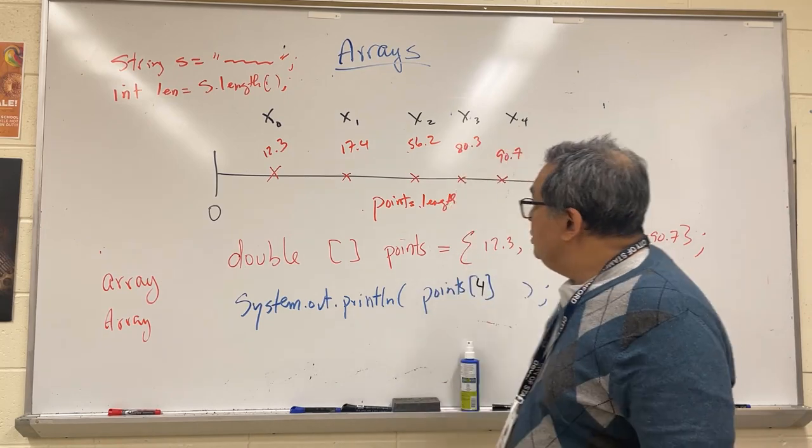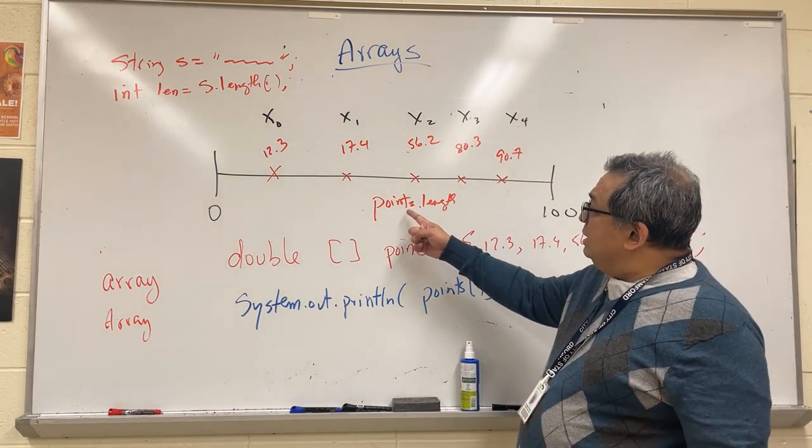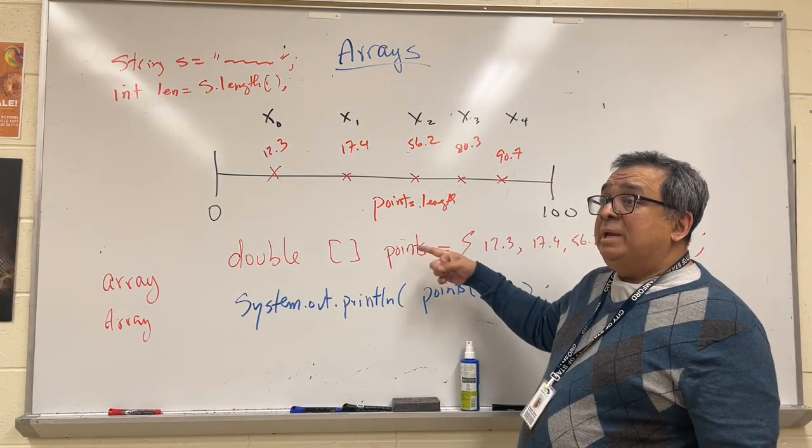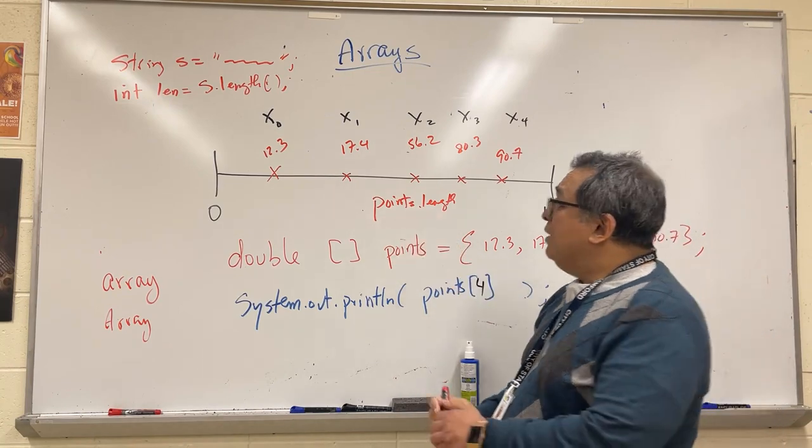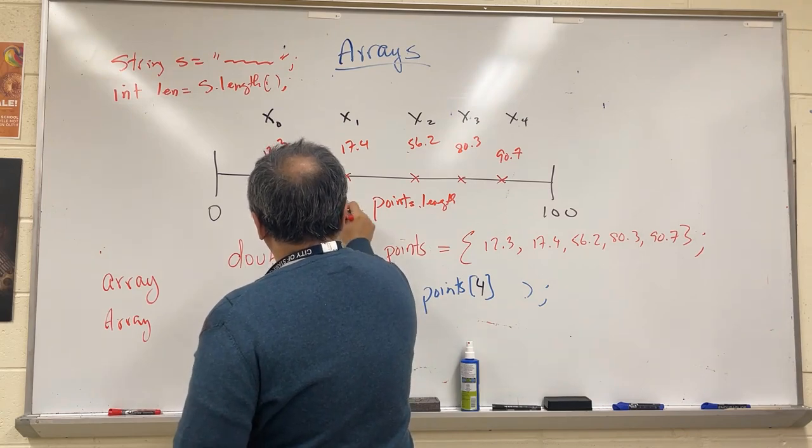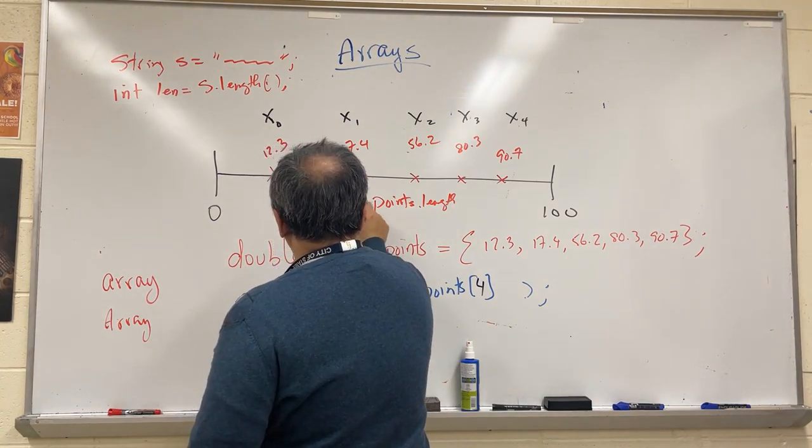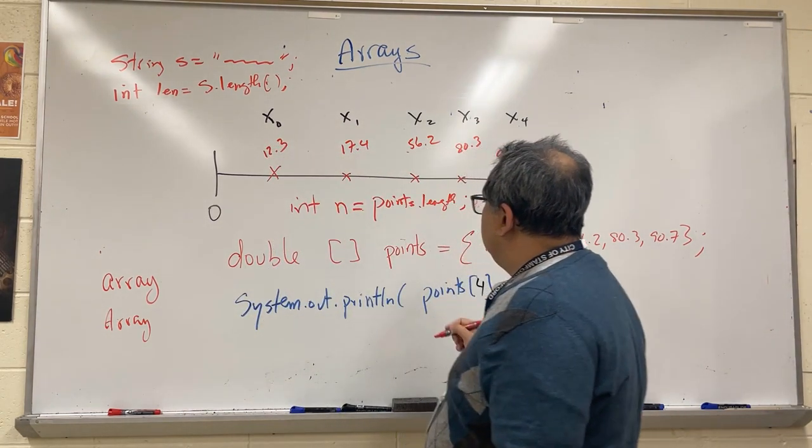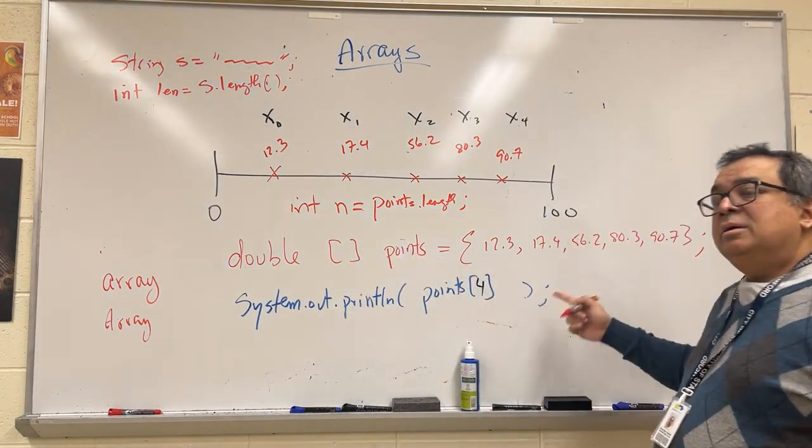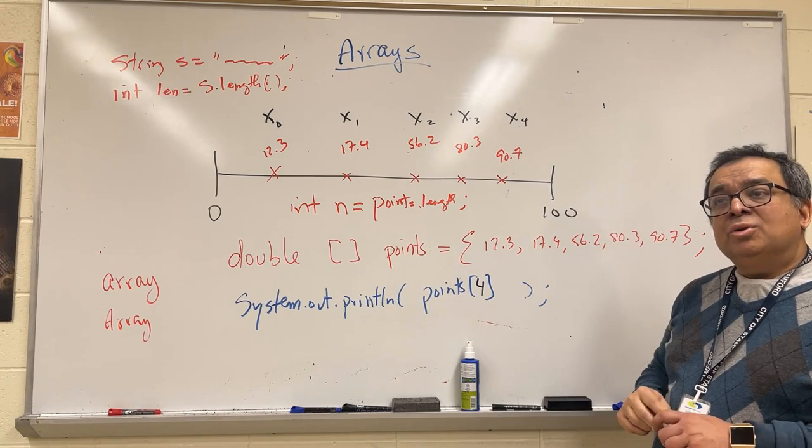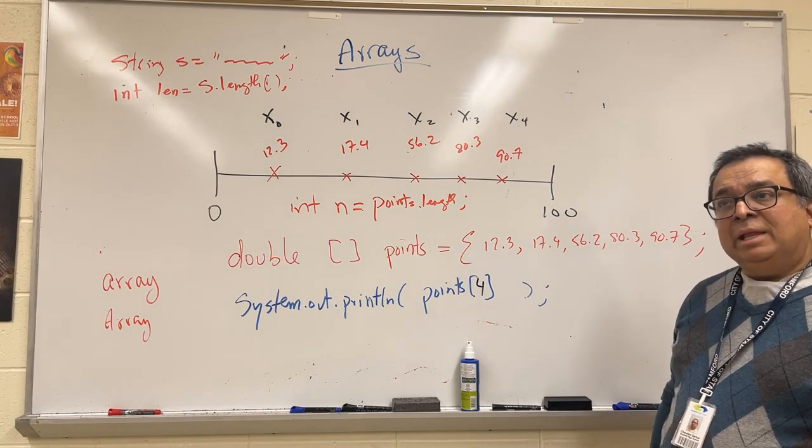The point being now is that if I want to ask an array how many elements do you have, I would use this expression. If I was to store this in some sort of variable like this for this array, what would n be? If you're not sure, ask yourself how many elements are in the array.